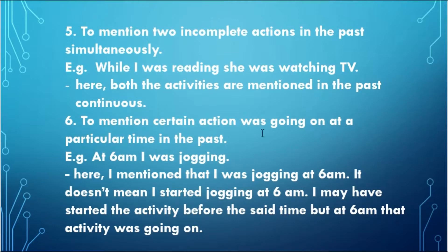The last use is to mention that a certain action was going on at a particular time in the past. For example: 'At 6am, I was jogging.' This doesn't mean I started jogging at 6am — I may have started the activity before the set time. But at 6am, I was jogging. So it is used to mention an activity that was going on at a definite, particular time in the past.